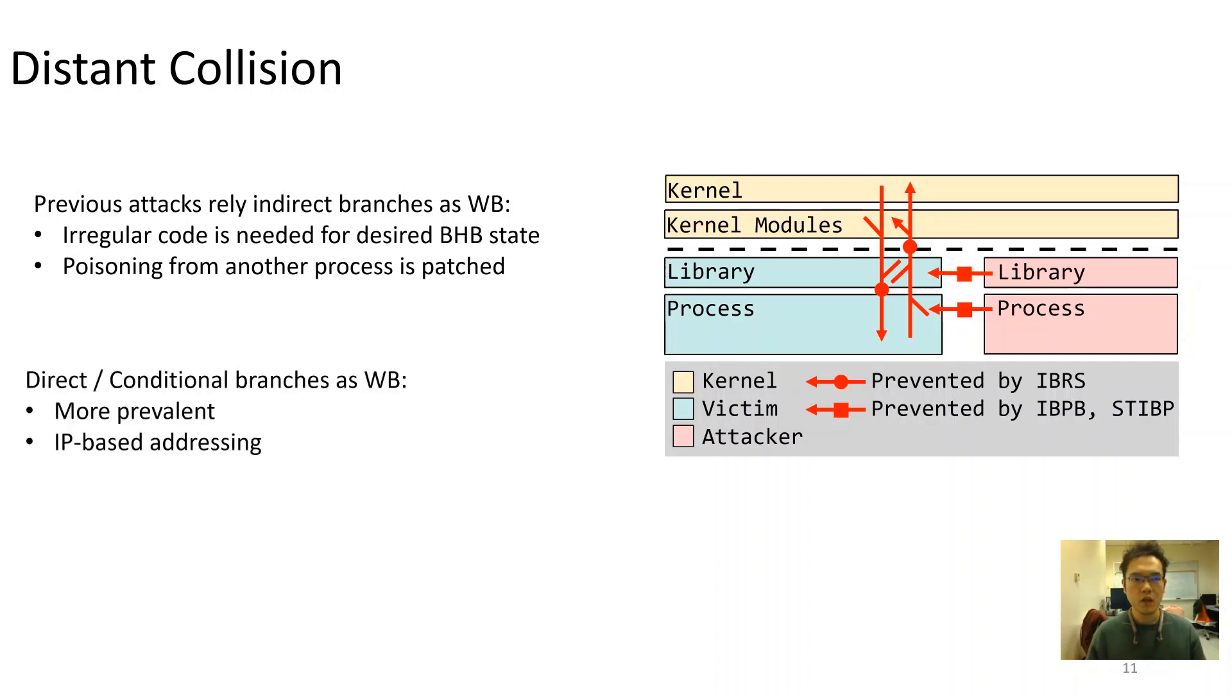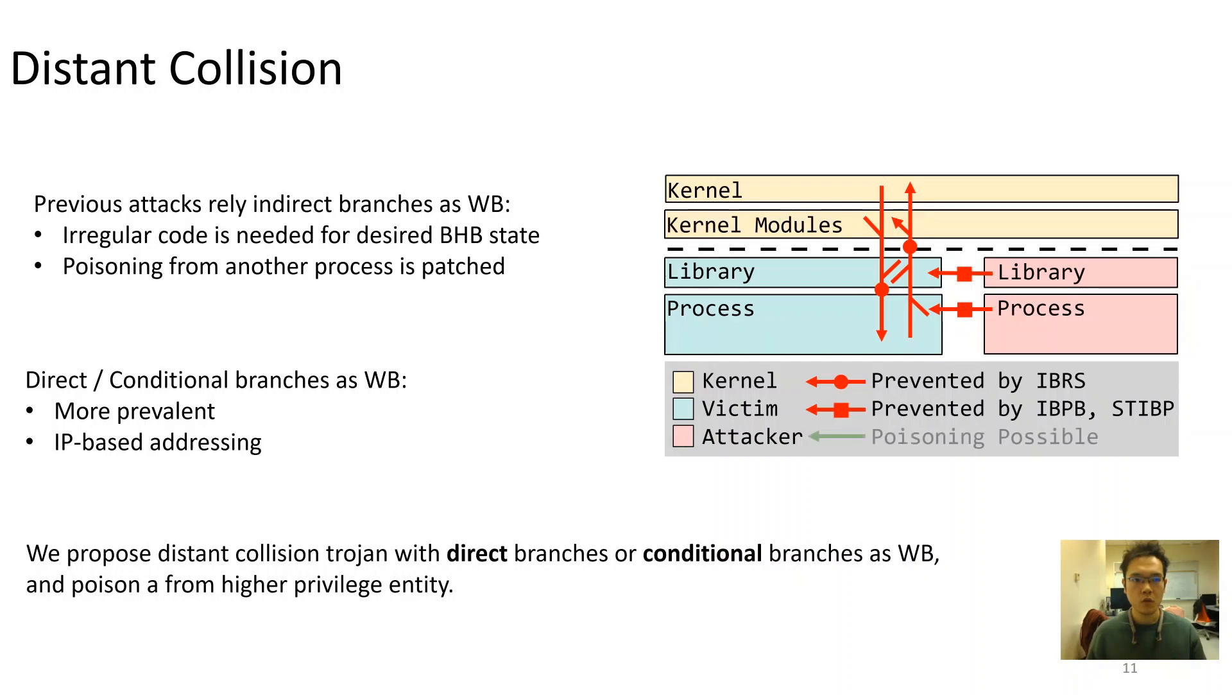On the other hand, we find target injection using direct branches or conditional branches are more ideal, as they are prevalent in normal code. And the collision does not require BHB state when indirect branch prediction fall back to the general prediction mode. We will also demonstrate how to poisoning from a higher privilege entity in this kind of attack.